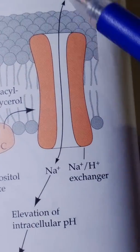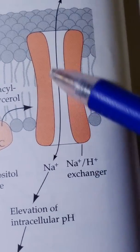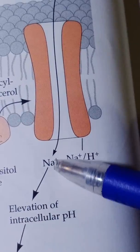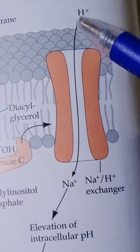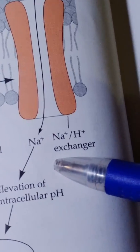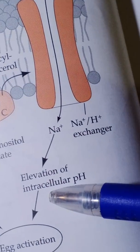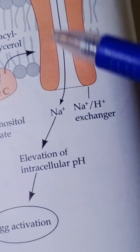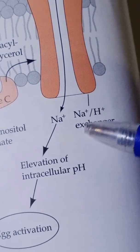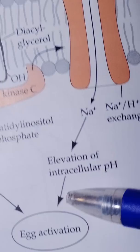And here, the sodium enters inside the cell. And hydrogen ions, they leave the cell membrane. And this exocytosis of hydrogen ion, here the sodium ions enter. And this exchange causes the elevation of intracellular pH.